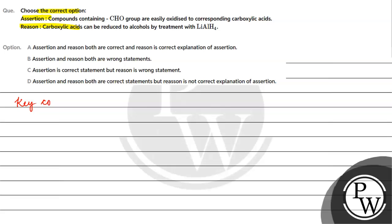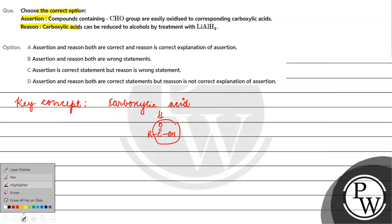Options are given to us. The key concept for this question is carboxylic acid. Such species, C double bond O single bond OH, what do we call? Carboxylic acids.